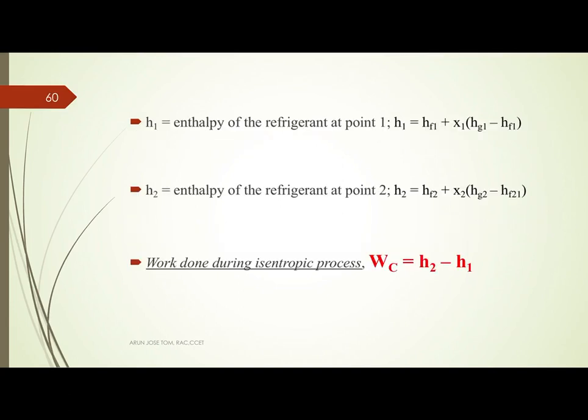The exit of the compressor is high pressure, high temperature wet vapor refrigerant — a mixture of liquid and vapor. To calculate the work input to the compressor, we need to find the enthalpy at two points: point 1 and point 2. Enthalpy at point 1: H1 equals HF1 plus x1 times (HG1 minus HF1).